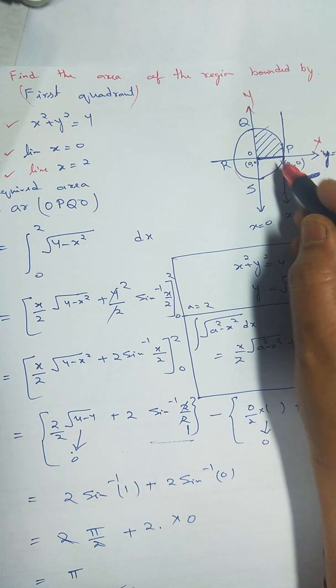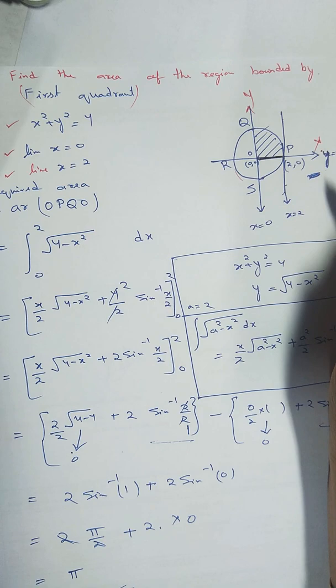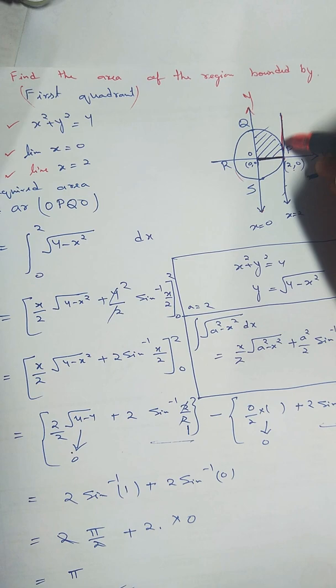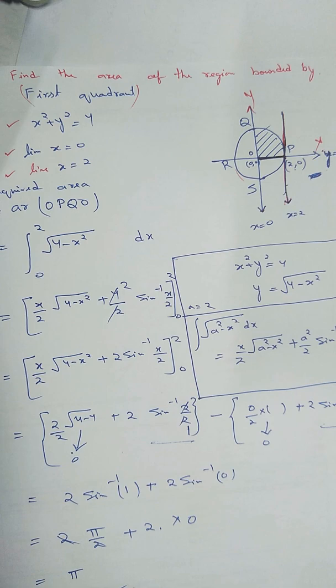So this distance is 2, the radius is 2, then point P coordinate is (2,0). And x = 0 is this line, and x = 2 is this one which is just touching point P.